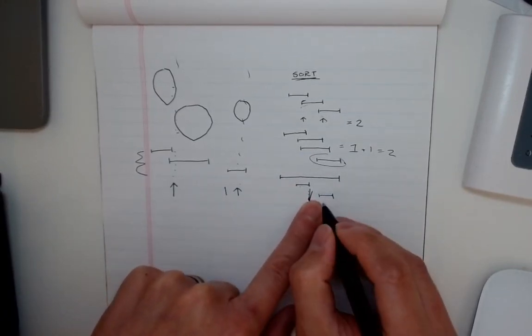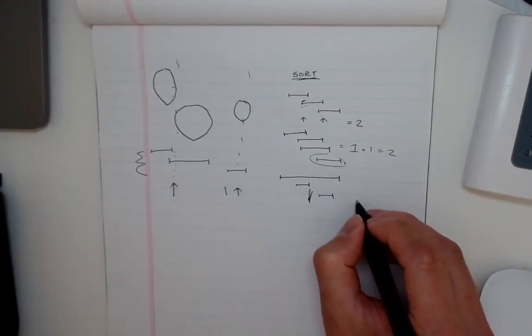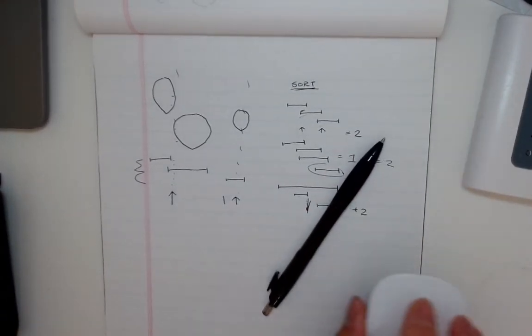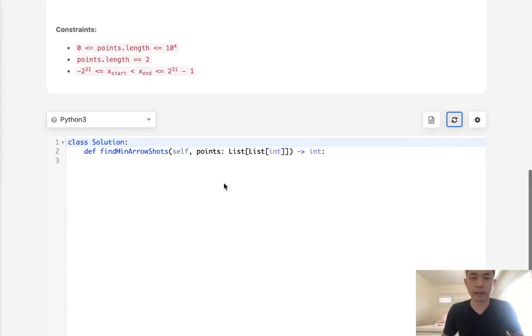And the next balloon, we can check, oh, well, this start is greater, so that's going to be another arrow. So all right, so I wish I could have explained that a little bit better, but hopefully that sort of makes sense.